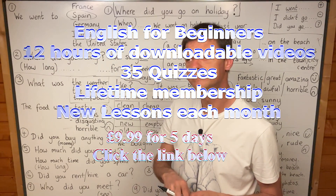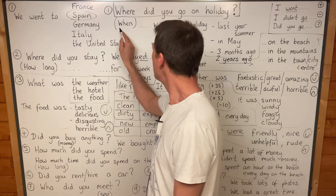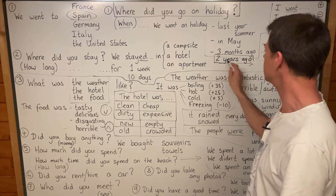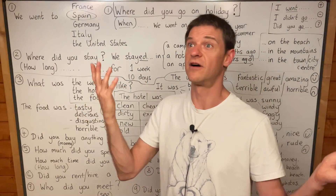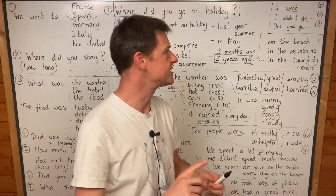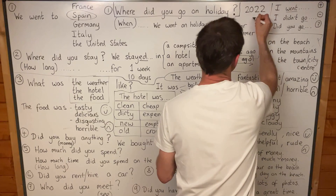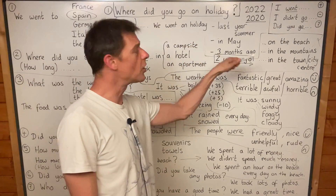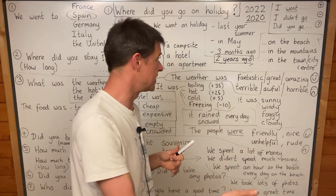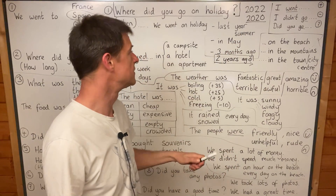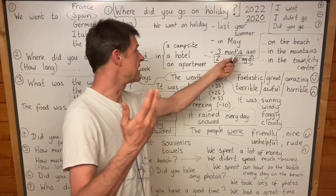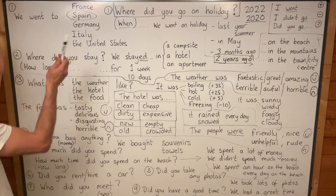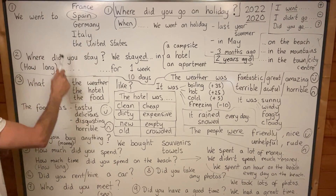Where did you go on holiday? And when did you go on holiday? We went on holiday two years ago, in 2020 — now it is 2022. Did you go on holiday last year? We didn't go on holiday last year. Did you go in April, in May, in June, in July? Did you go to France, Germany, Italy, the United States? Where did you go on holiday?